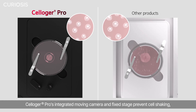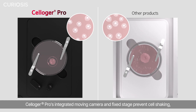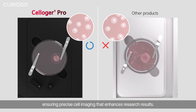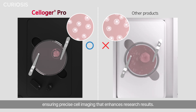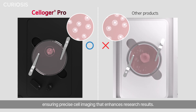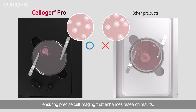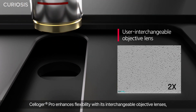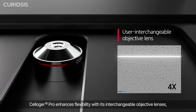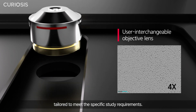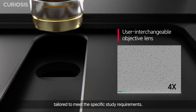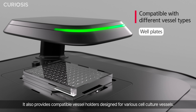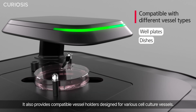Cell Ogre Pro's integrated moving camera and fixed stage prevent cell shaking, ensuring precise cell imaging that enhances research results. It also enhances flexibility with interchangeable objective lenses tailored to meet specific study requirements.